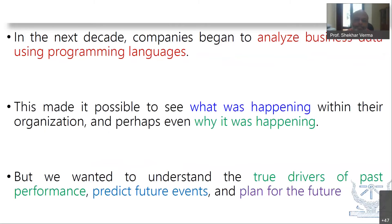By the 90s, we began to analyze data not just as a spreadsheet, but we started using programming languages to understand data. This made it possible for us to see what was happening and in some cases why it was happening. We could look a little behind the data and find out not only what was happening, but why it was happening — the 'why' of things began to unfold.